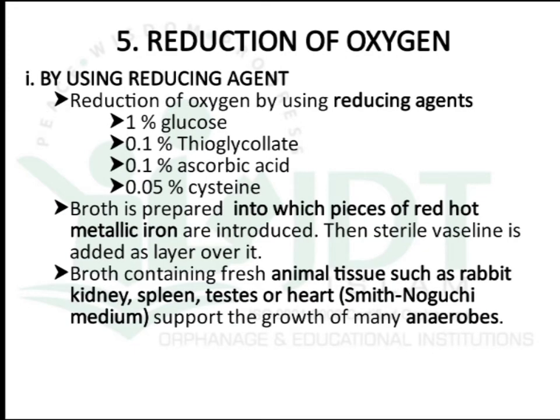The fifth method is reduction of oxygen. This can be done using reducing agents like 1% glucose, 0.1% thioglycolate, 0.1% ascorbic acid, or 0.05% cysteine. It can also be done by adding a piece of red-hot metallic iron to broth and then adding sterile vaseline on the surface of the prepared broth. Additionally, broth containing animal tissue such as rabbit kidney, spleen, testis, or heart — as in Smith-Noshi medium — will support the growth of many anaerobic microorganisms.